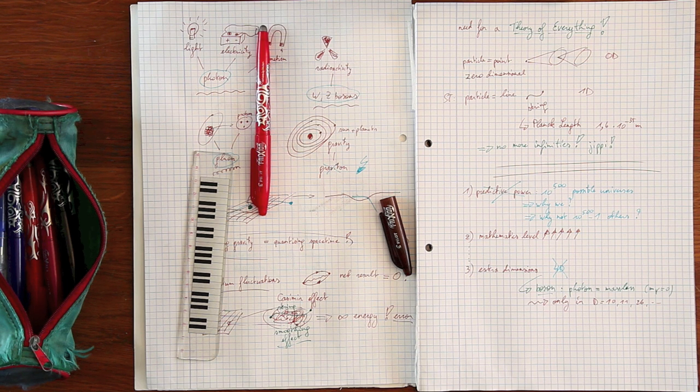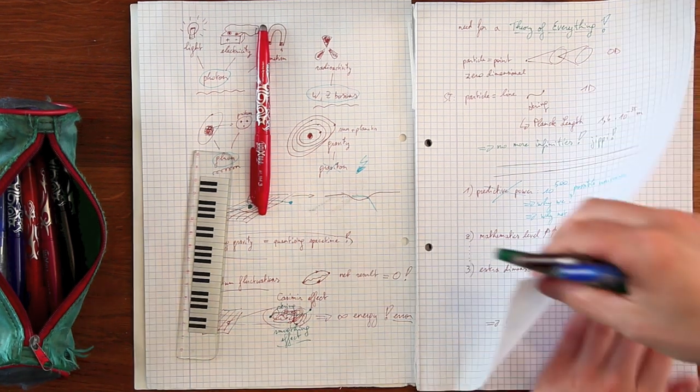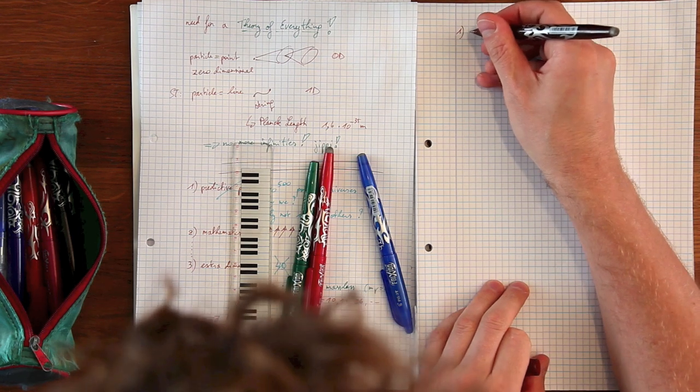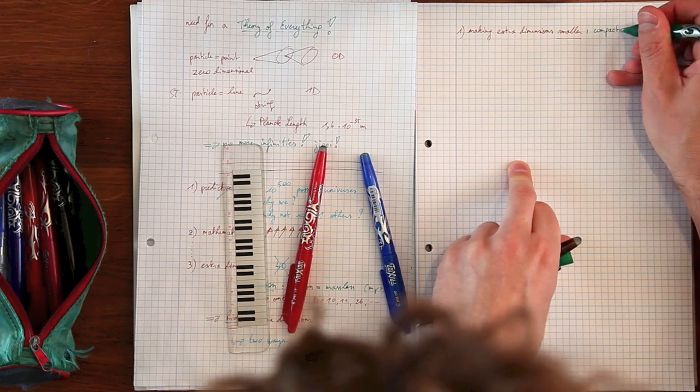There are two different ways to hide extra dimensions from our daily microscopic observation. One way is by making them much smaller than the 4 dimensions we know. This is called compactification.